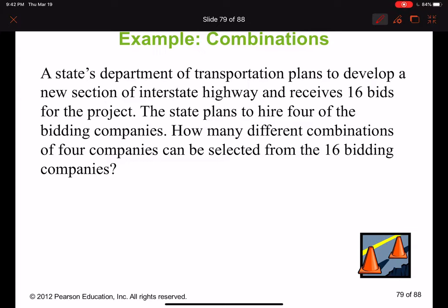Here it is: a state's Department of Transportation plans to develop a new section of interstate highway and receives 16 bids for the project. The state plans to hire four of the bidding companies. So four out of 16, right?